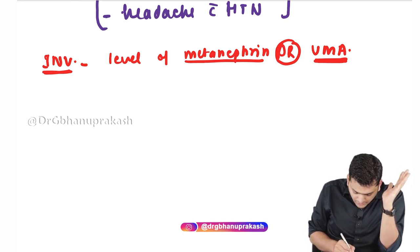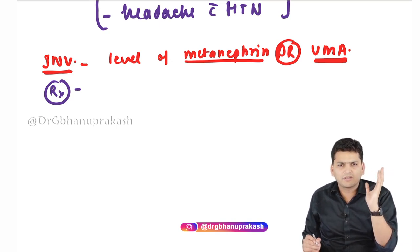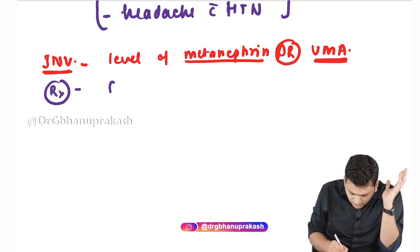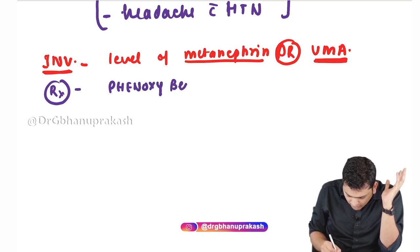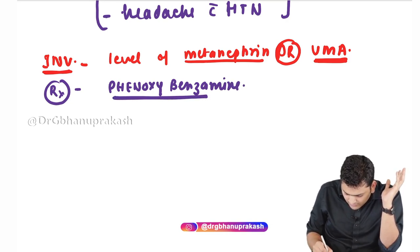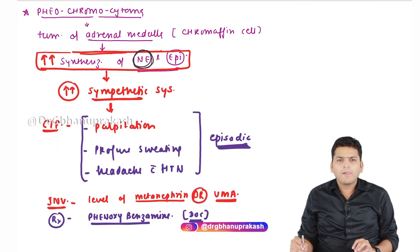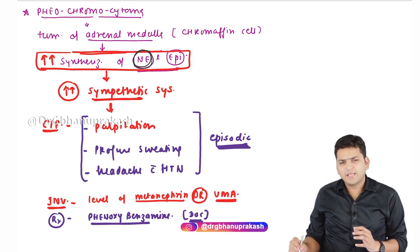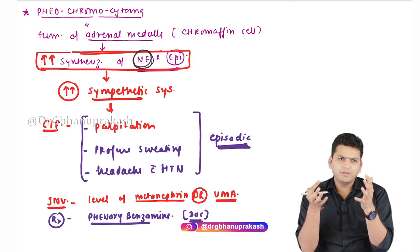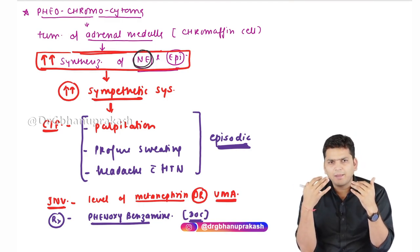The treatment of pheochromocytoma requires irreversible inhibitors of the sympathetic system. The drug of choice is phenoxybenzamine. This is the first clinical correlation of the catecholamine synthesis pathway — pheochromocytoma, with excess norepinephrine and epinephrine.